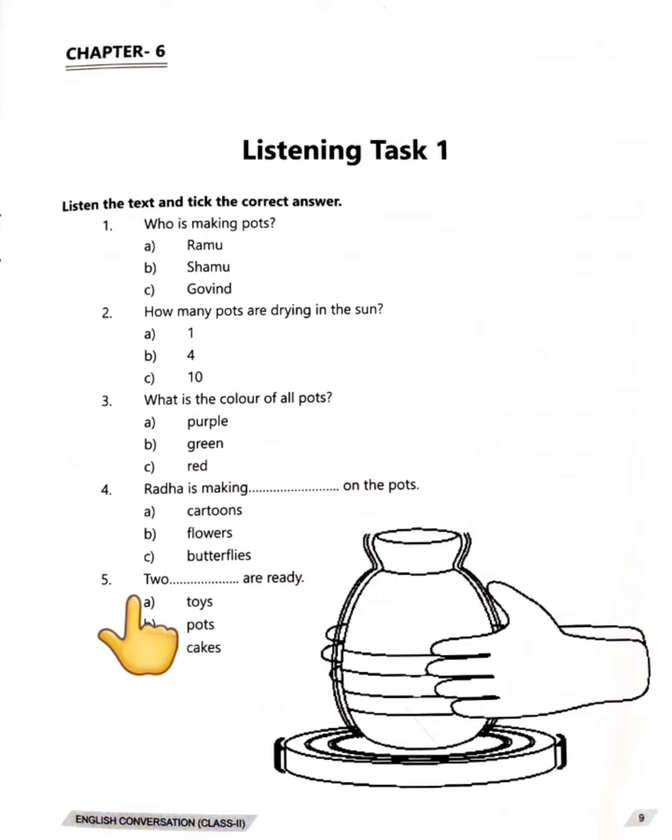Fifth question is, two dash are ready. Two ki ready ne? Option A, toys. Option B, pots. Option C, cakes.